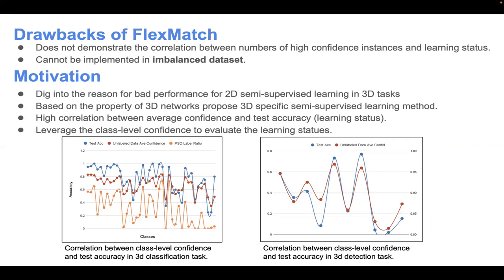Hence, the motivation of this work is to dig into the reason for bad performance of 2D semi-supervised learning. Secondly, we find that there is a high correlation between the class-level confidence and the test accuracy in both 3D classification and detection tasks, like the two figures below. Based on this finding, we propose a 3D-specific semi-supervised learning method.